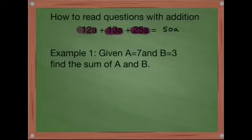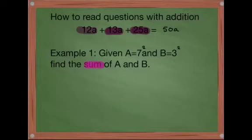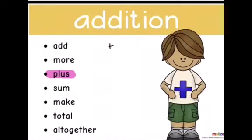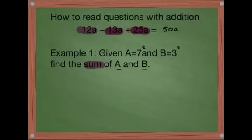So the first example we are going to solve: given a equals seven squared and B equals three squared, find the sum of a and B. We can see the vocabulary 'sum' here. Sum — if we see this word, sum means plus. So to find the sum of a and B we need to write our solution as a plus B.